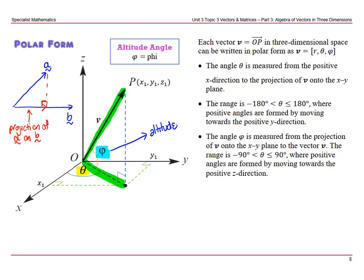The range is negative 90 degrees less than phi, which is less than equal to 90 degrees. So you have to go between negative 90 and 90, where positive angles are formed by moving towards the positive z direction. Positive angles up, negative angles down.